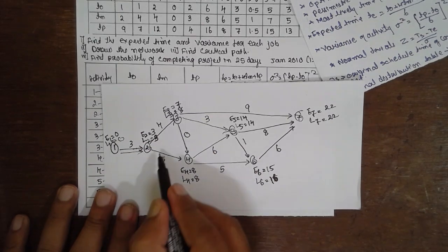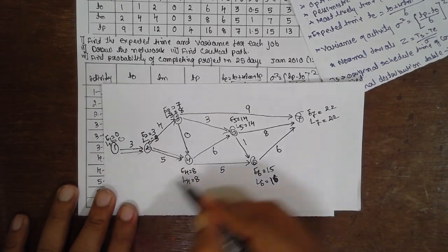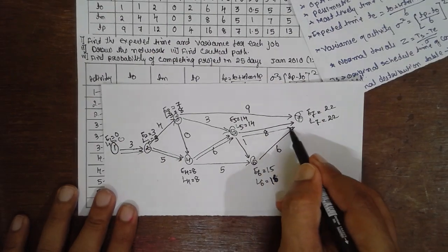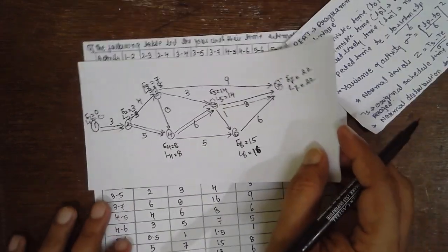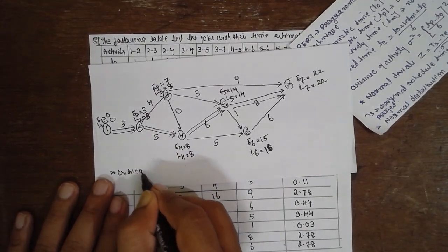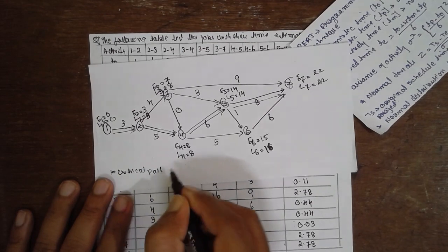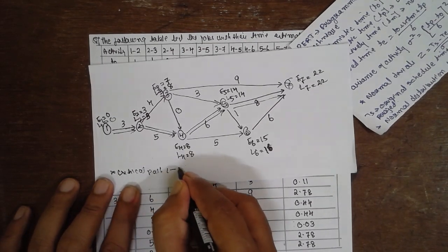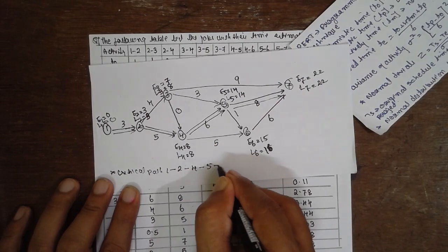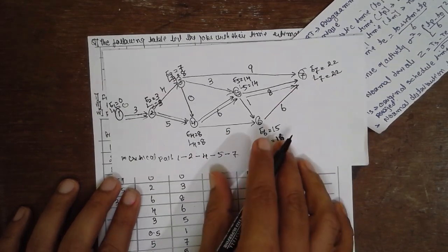Go for the critical path here. 3 and 3, 8 and 8, 14 and 14, 22. This is the critical path. Critical path: 1-2, 2-4, 4-5, 5-7. This is the critical path.